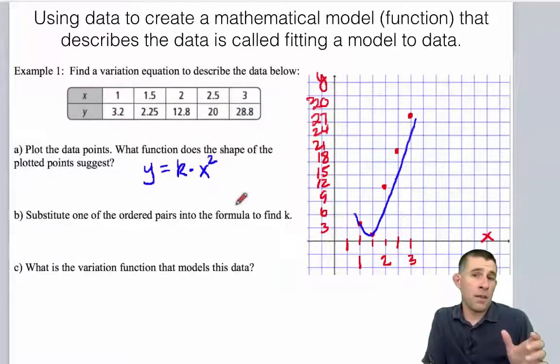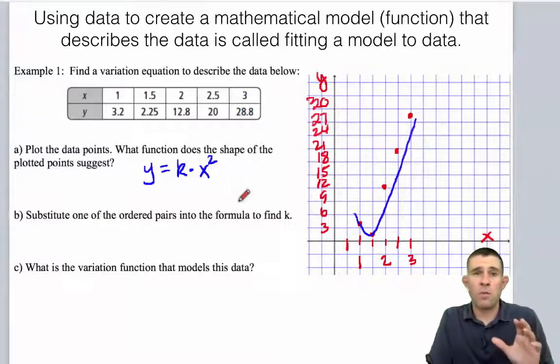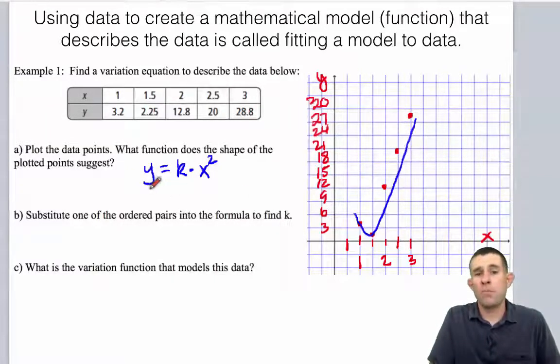Remember, if it's y equals k times x, that would be linear. If it were y equals k over x, that would be one of our hyperbolas. So we have the parabola, y equals k times x squared.